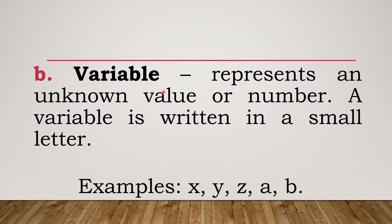We can also have fractions or decimals — we call them all as constants. Variables, on the other hand, are the letters we use to represent a known value or number. We write variables using small letters. Examples are x, y, z, a, and b — these are the common variables used in algebra, but you can use any letter you want.